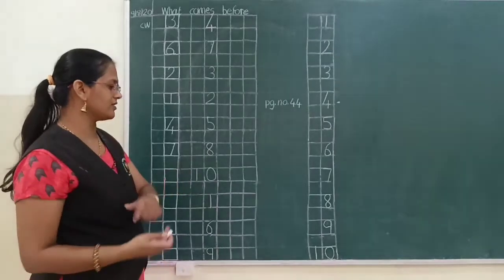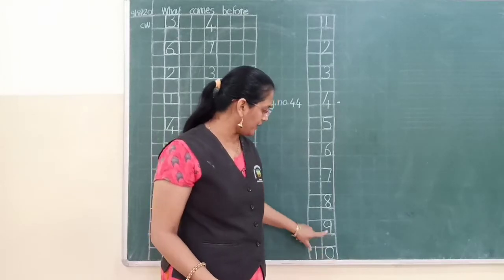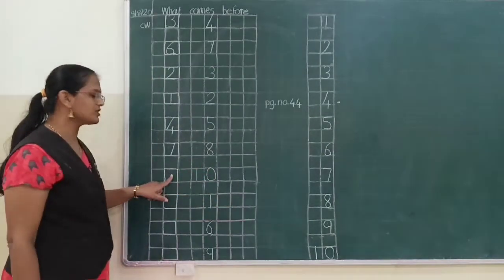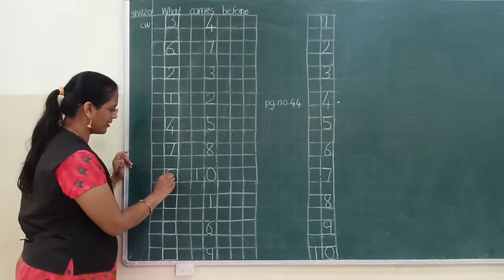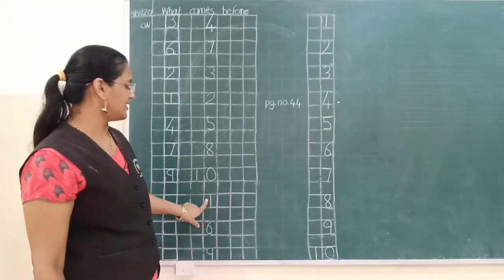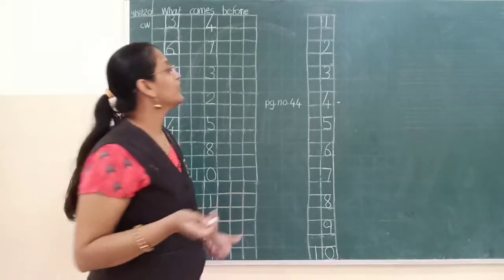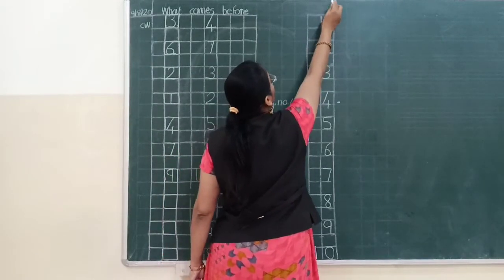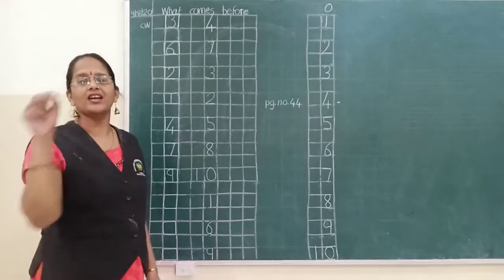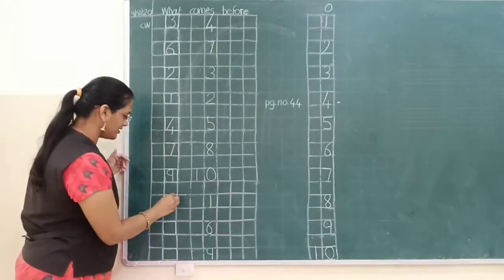Now see — one, zero, ten. So where is your 10 here? One, zero, ten. So ten likhne ke pehle humne kya likha tha? Nine. So same way, ten ke pehle kaun sa number aayega? Yes! Number nine. Now here it is number one. Before one, what comes? One ke pehle yahan pehle aata hai? Zero. Koi number nahin hota toh hota hai zero. So one ka before number hai? Zero.